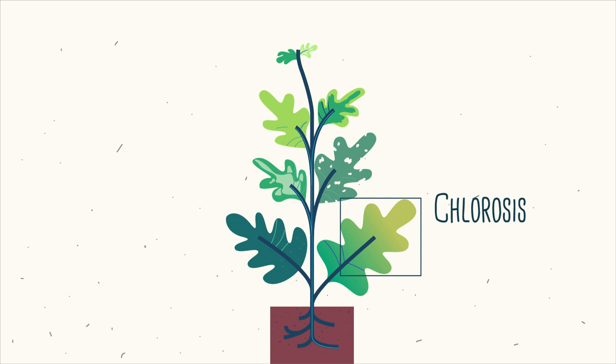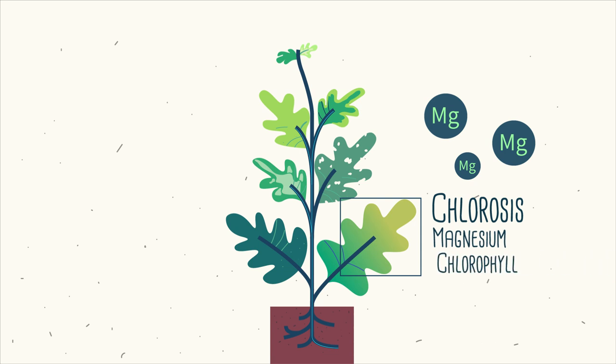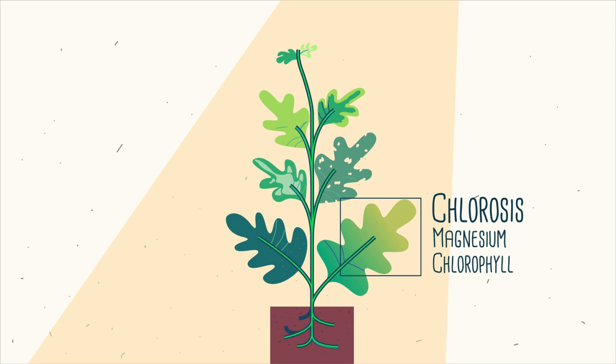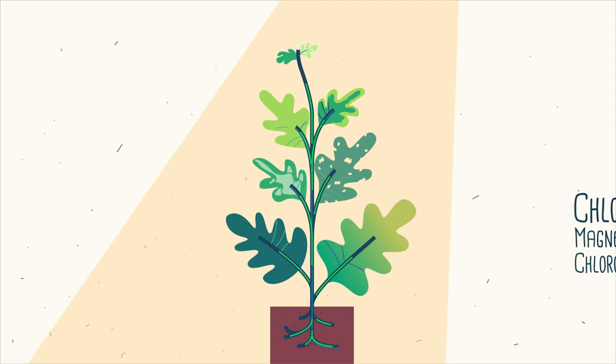Another example of nutrient deficiency is a change of leaf color called chlorosis, which is caused by magnesium deficiency. Magnesium ions are needed to make chlorophyll, which is essential for photosynthesis and energy production.